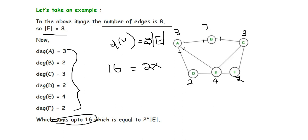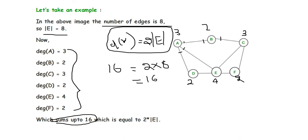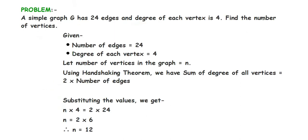The sum of degrees of vertices equals twice the number of edges — this is the universal formula of the handshaking lemma, which must be remembered. It is the most important and foundational theorem in graph theory.